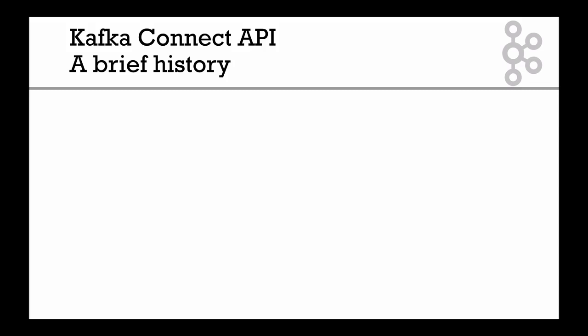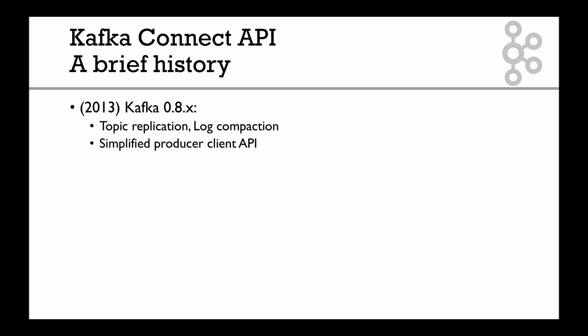Hi, in this lecture we're going to learn about Kafka Connect, why Kafka Connect, and a bit of its history. So in 2013 there was Kafka 0.8, and it included a bunch of new features such as topic replication, log compaction, and it simplified a lot the producer client API.